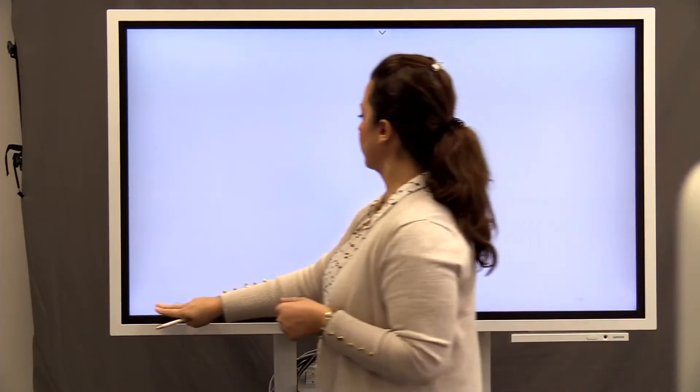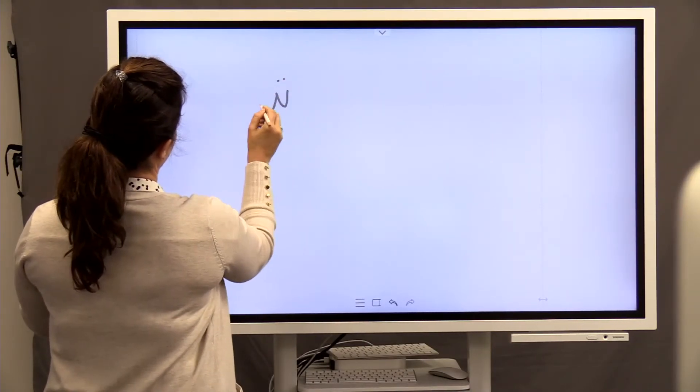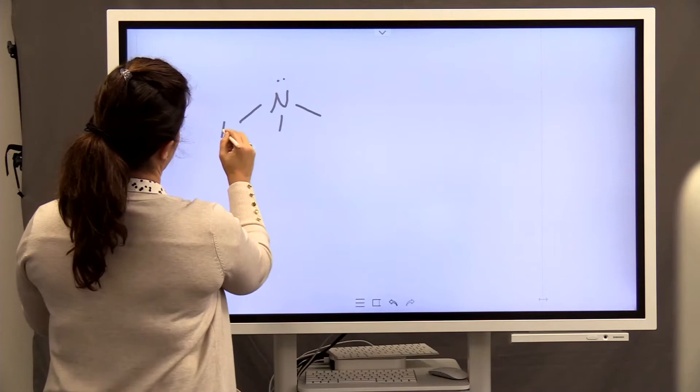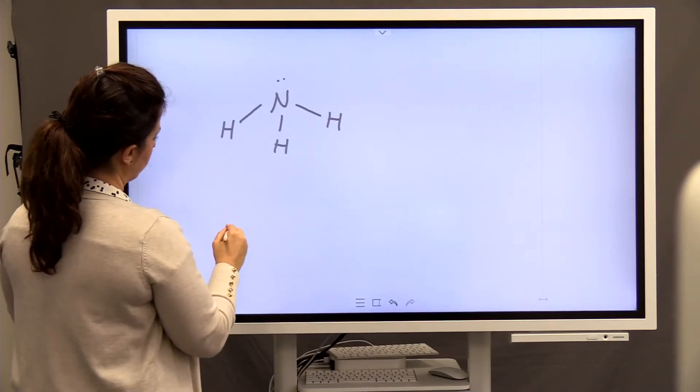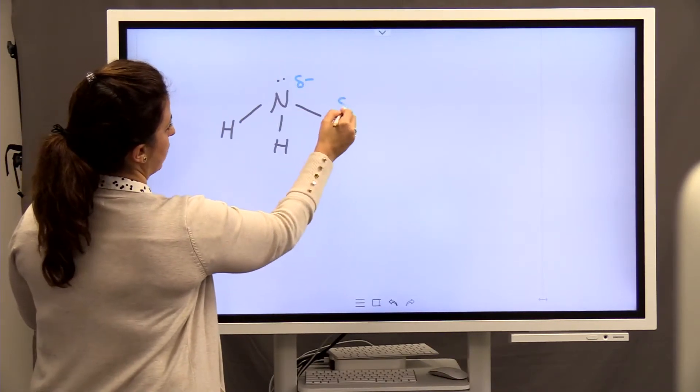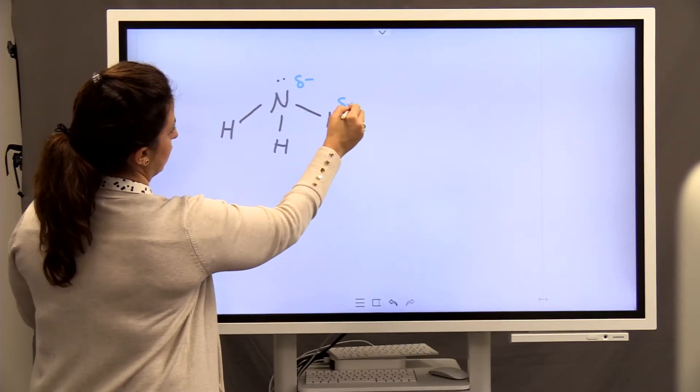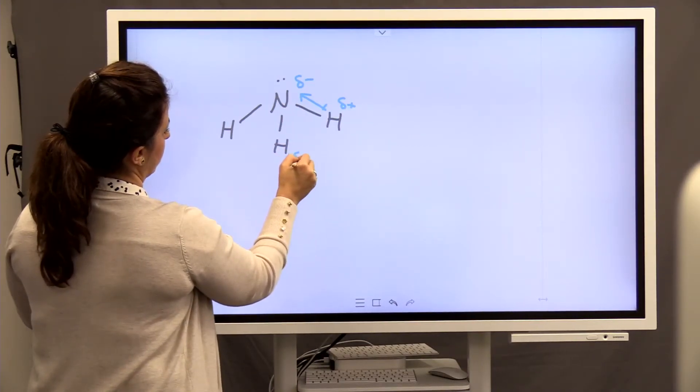And the last molecule, let me work on a molecule like NH3. Between nitrogen and hydrogen, which atom is more electronegative? Nitrogen, right? So on each bond, dipole moment is towards nitrogen, correct?